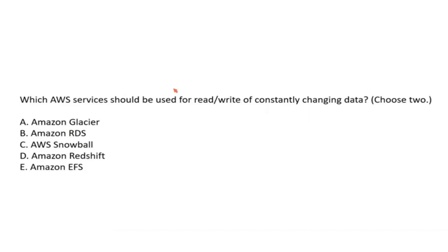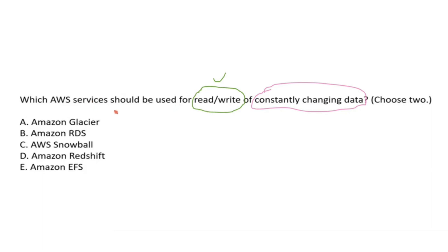Here we have two key values: one is 'read or write' and the other is 'constantly changing data.' Let's eliminate some options. Glacier is related to data archiving — data that hasn't been touched for three to four months automatically shifts from S3 to Glacier. It's like a data warehouse, so it cannot be used for constantly changing data. This option is eliminated.